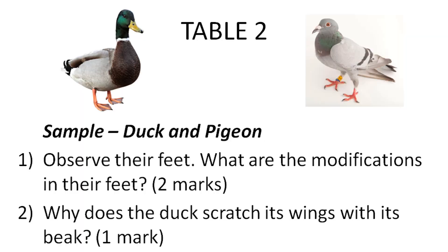On the next table, there were two parts. In the first part, a model of a duck and pigeon was kept. The questions were: observe the feet and write the modifications, and why does the duck keep rubbing its wings with its beak? For the duck, it has webbed feet useful for swimming — it pushes water back and gets a reaction force to go forward. For the pigeon, the thumb is on the opposite side of the fingers, giving a good grip to sit on tree branches. For the second question, the duck secretes an oily substance from its beak and applies it to its feathers so they don't get wet in water.